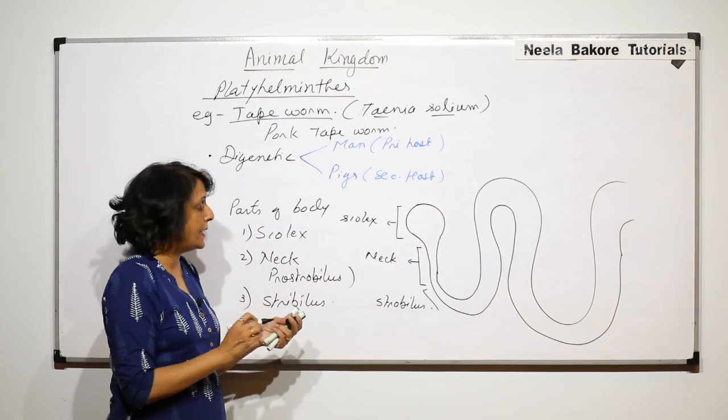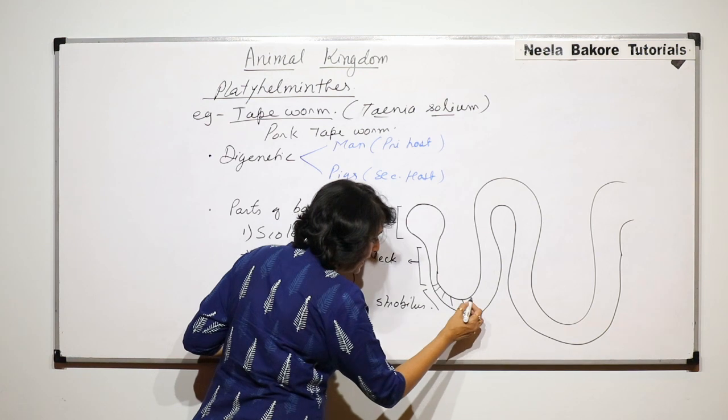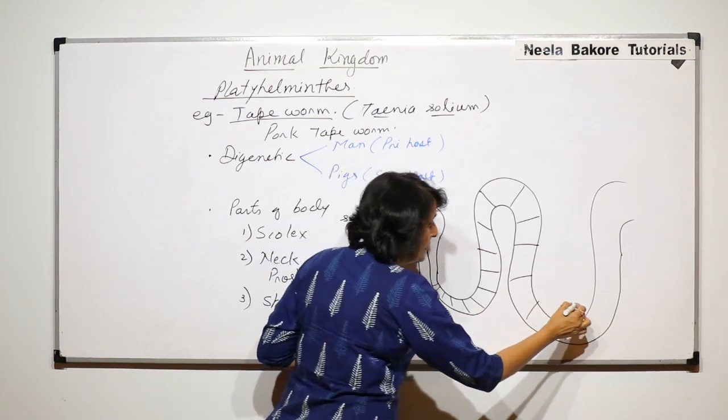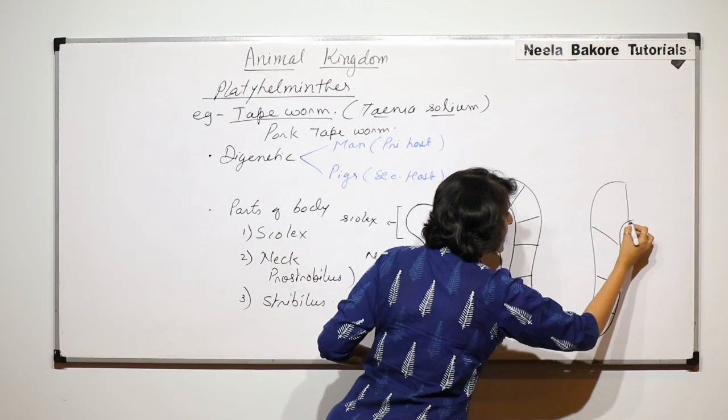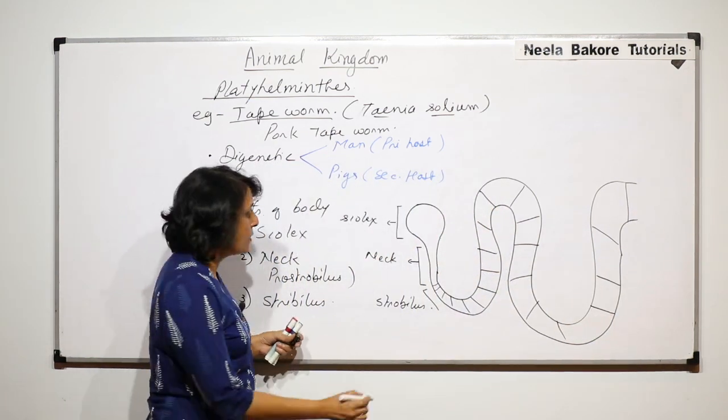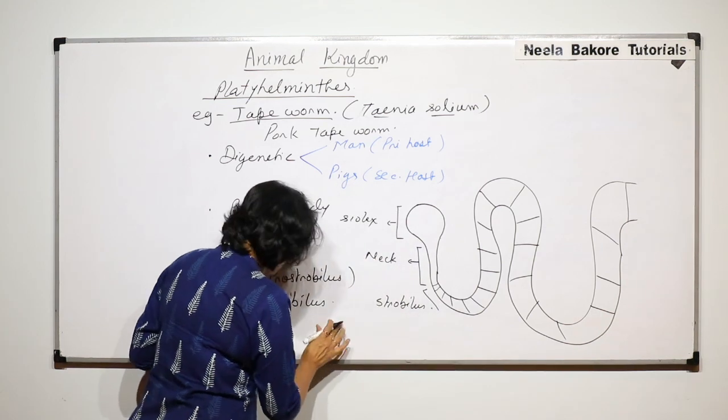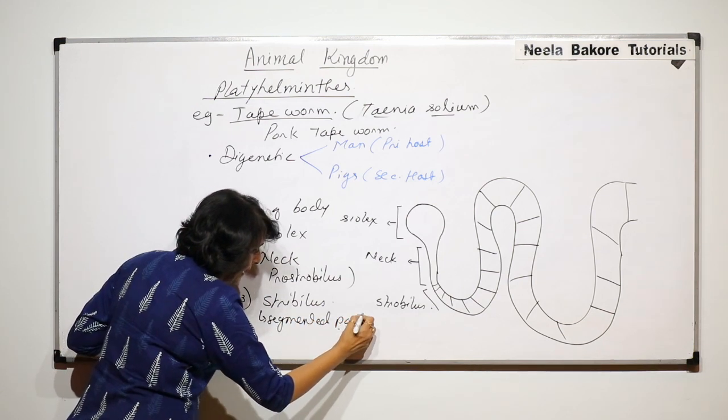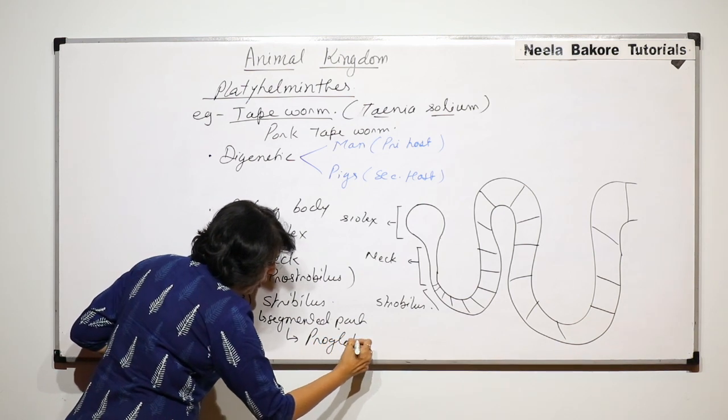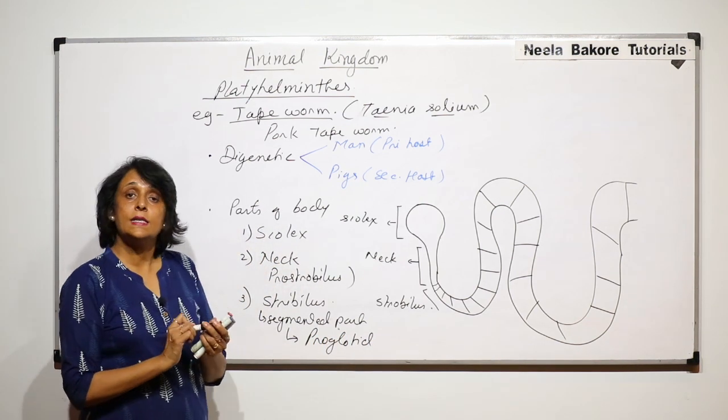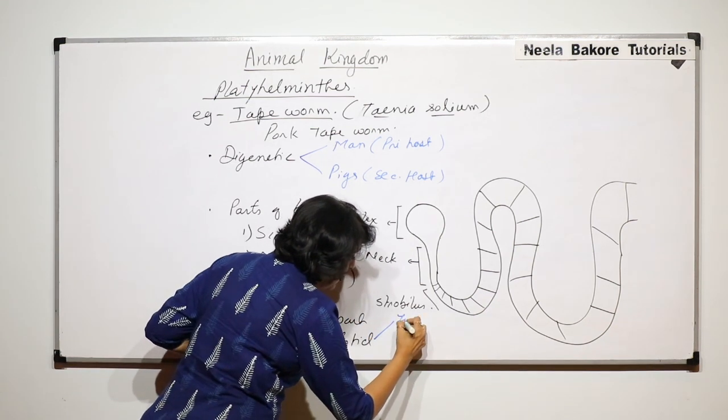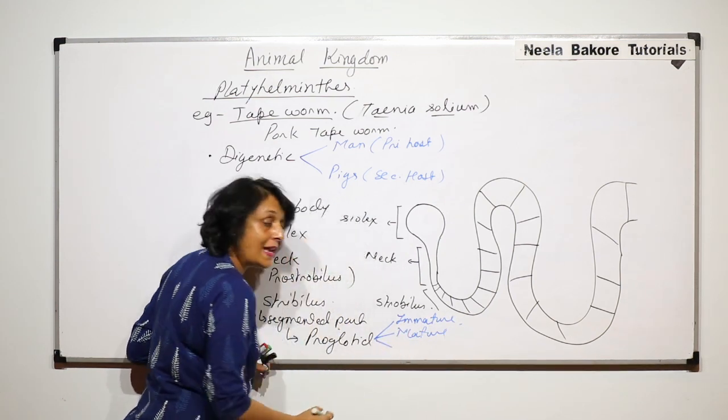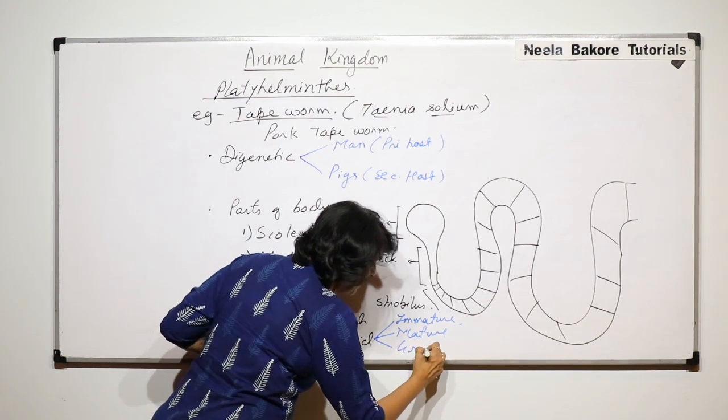Now in the strobilus there are segments. From here we start seeing these segments, and as you can see as we are going towards the posterior end the segments are becoming bigger and bigger. These segments are known as proglotids. So when we talk of strobilus we can say it is the segmented part and each segment is known as proglotid. These proglotids are of three types: immature proglotids, then mature proglotids, and the last proglotids are known as gravid proglotids.